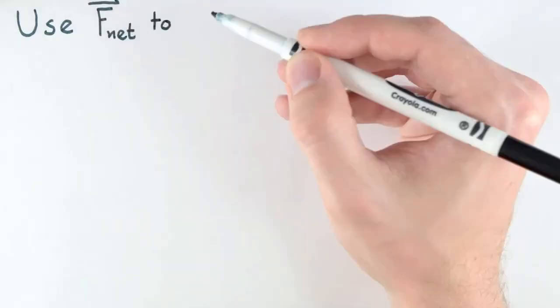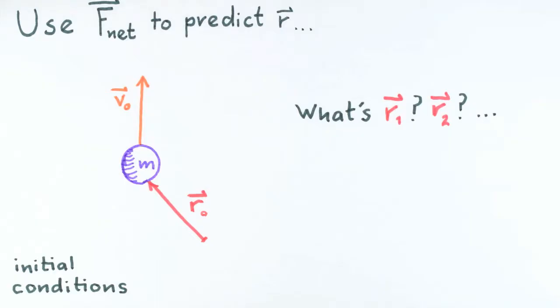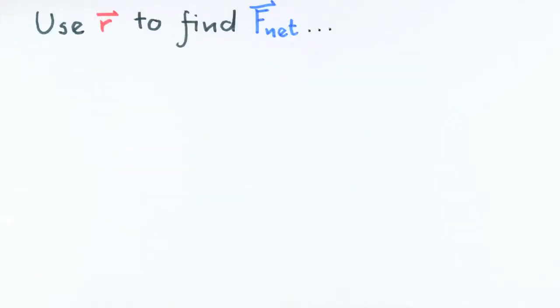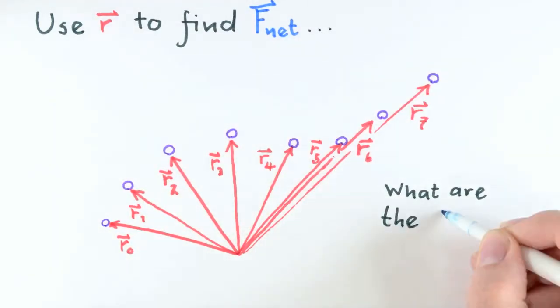To this point in the course, we've placed a big emphasis on using Newton's second law to predict motion. As we know, to do this we typically need to specify how the motion starts out, the initial conditions, and we need to specify all the significant interactions that add up to give the net force on the system due to agents in the surroundings. There will be times, though, when we want to go the other way, situations where we'll know the motion but we'll want to determine something about the forces acting on our system.